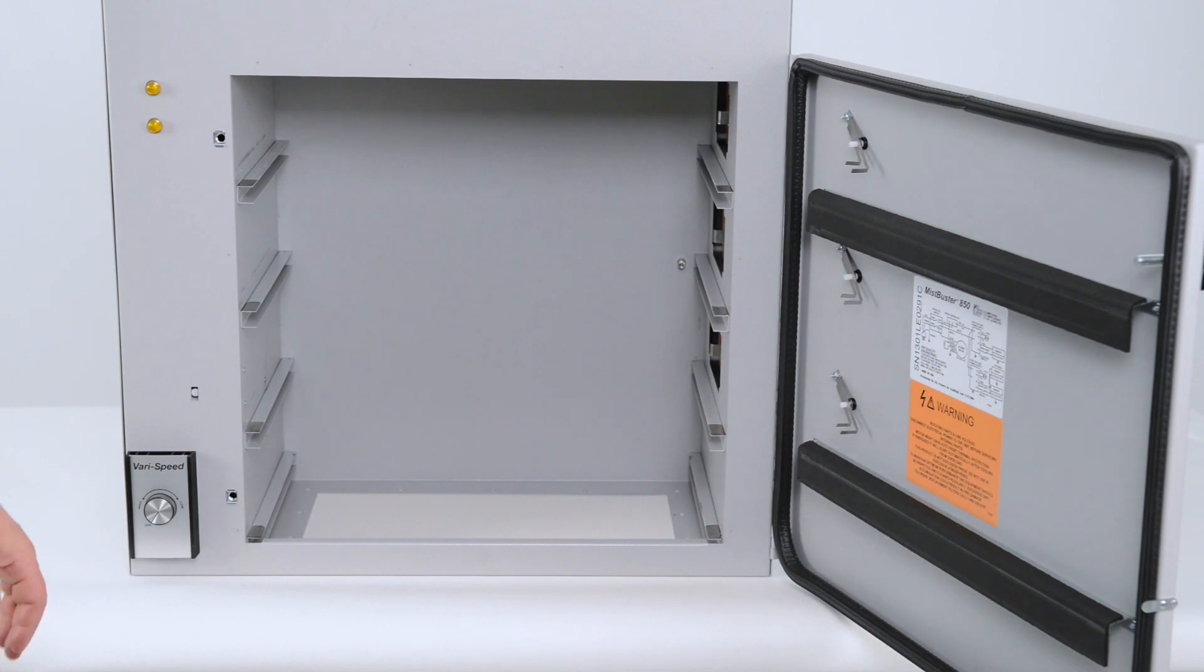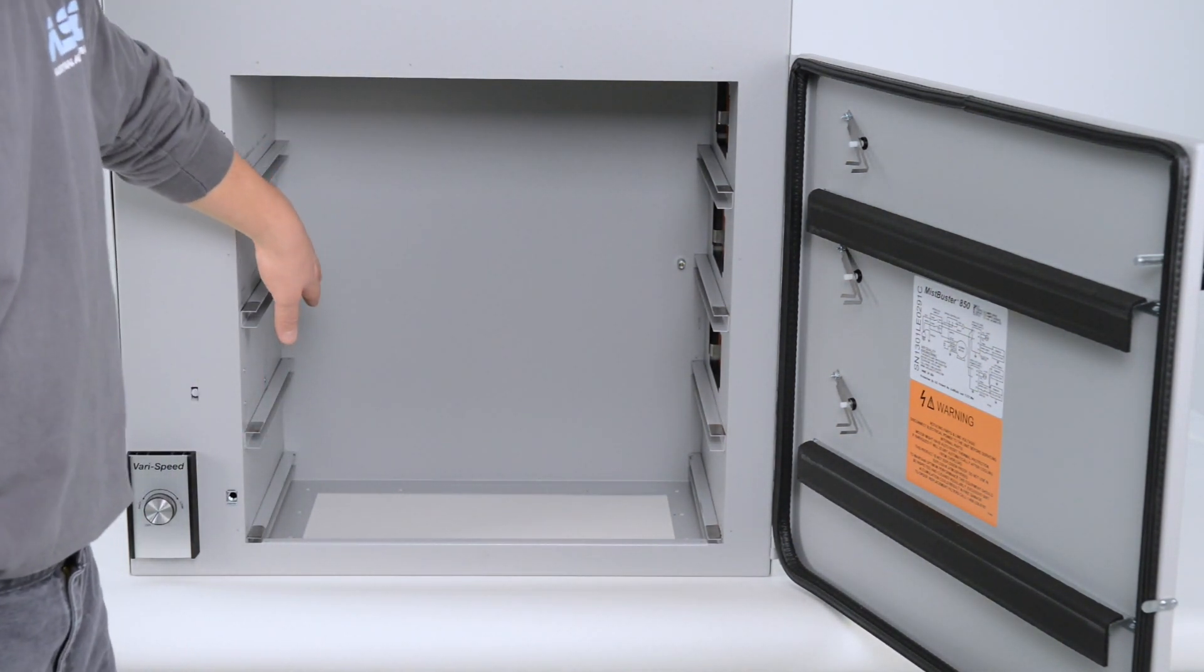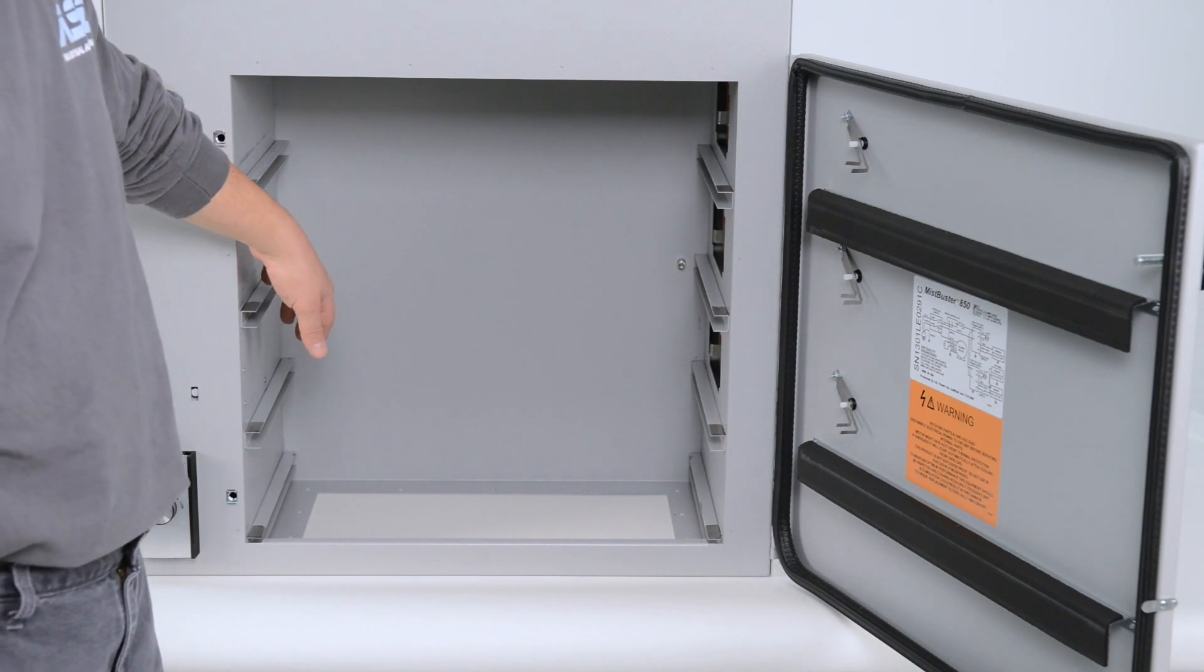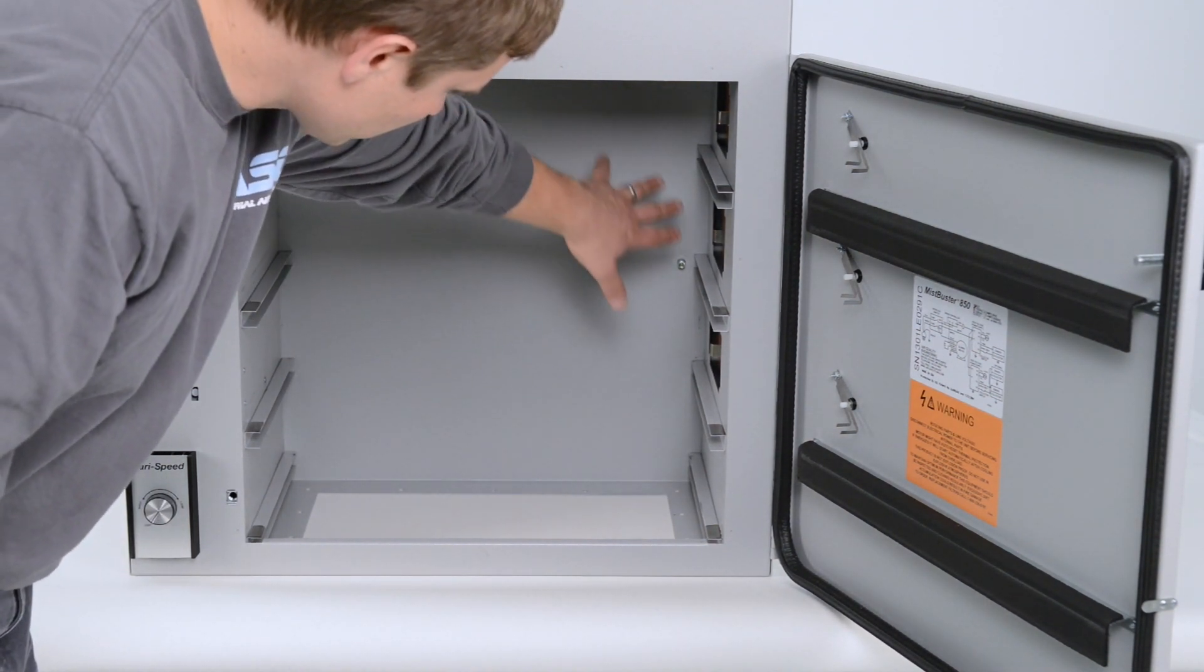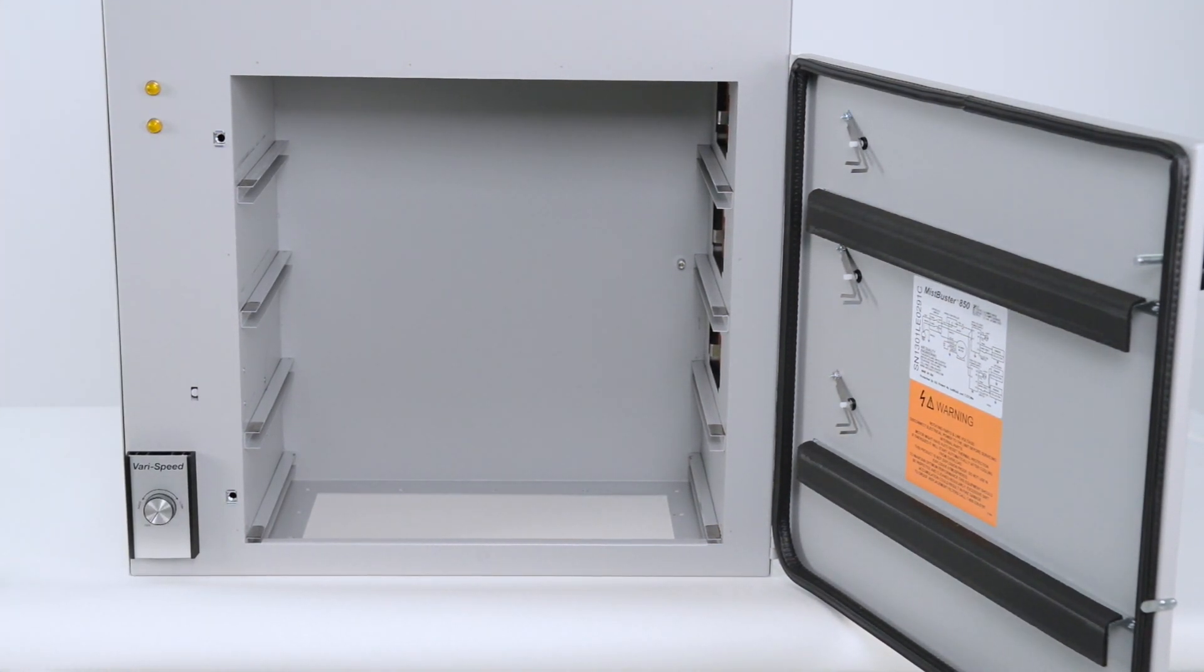The next thing you want to do is visually check the inside of the cabinet and clean it using simple green or a similar type cleaner.